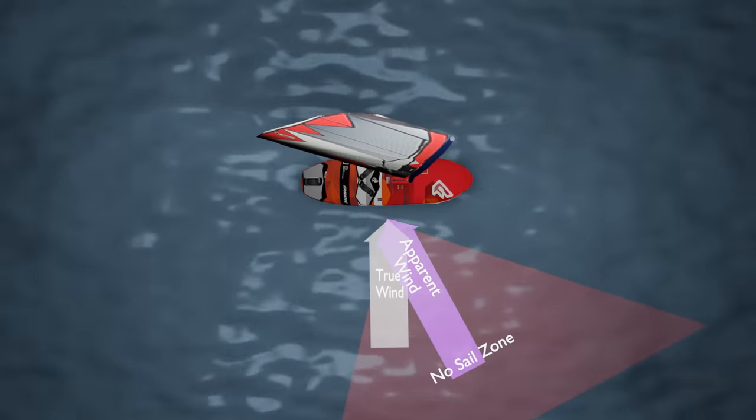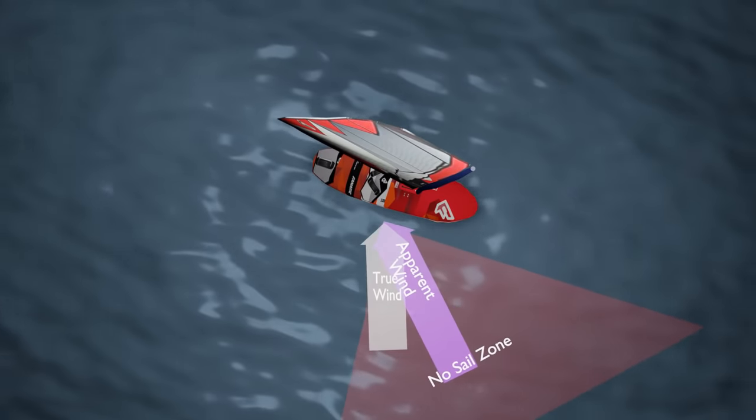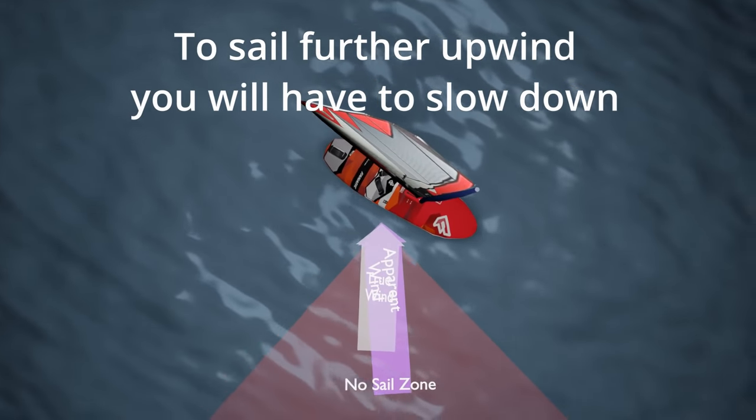The one thing with the apparent wind is that the angle of the no-sail zone will also change, so that if you're moving fast, you will not be able to sail too far upwind without slowing down.